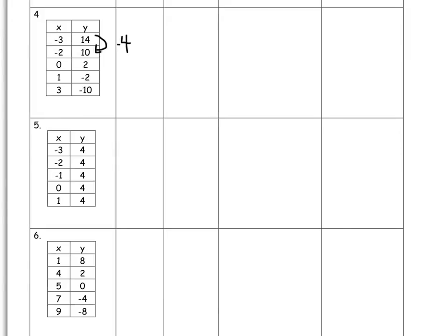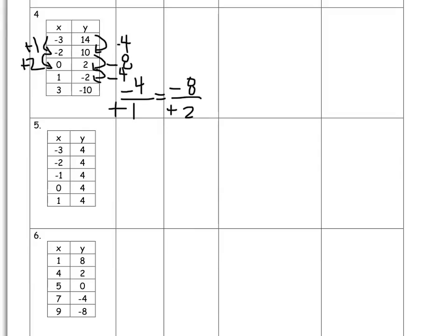This one is down four, so on my slope: negative four over positive one. What about this one? Down eight, and change in X is plus two — negative eight over two. Is it linear? Let's try the next one: down four, plus one. We're still good. Last one: down eight, plus two. It's linear.